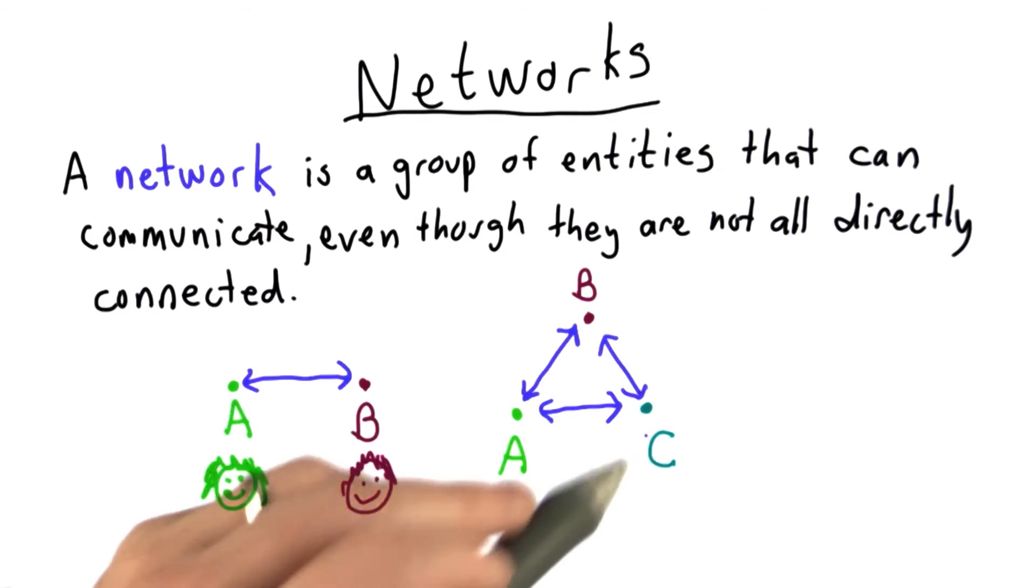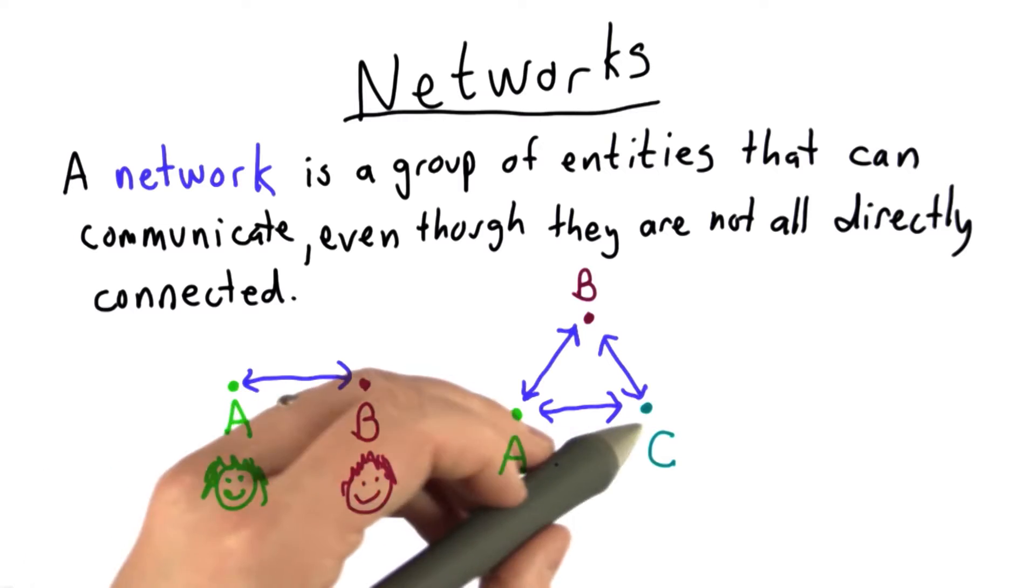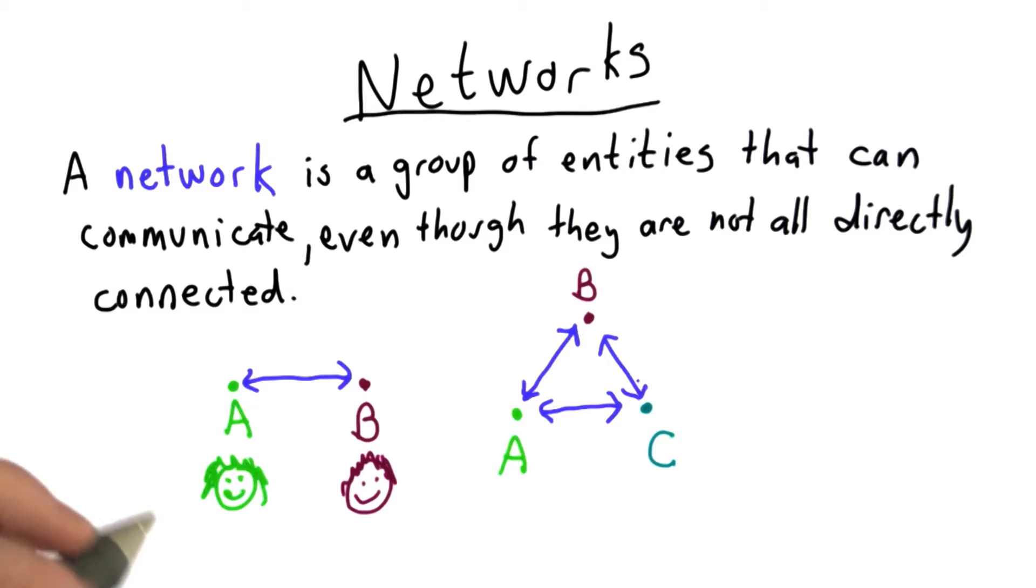If Alice wants to talk to Charlie, she has a direct link to Charlie. She doesn't need to use Bob. There's no way to communicate other than across these direct links. So even in this case where there are three people who can all communicate, we're still going to say that's not a network.